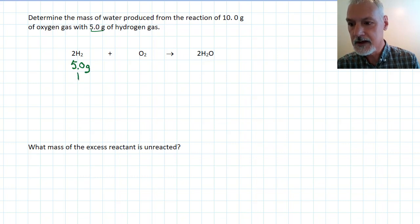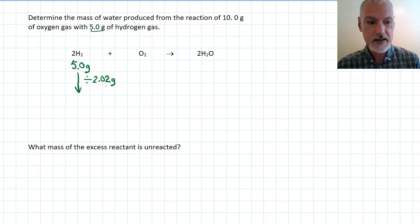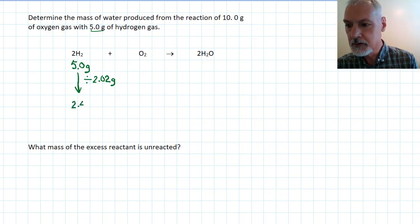From that five grams I'm going to convert that information into moles by dividing by the molar mass of hydrogen which is 2.02 grams per mole. When I do that I arrive at my number of moles of hydrogen which would be 2.48 moles.